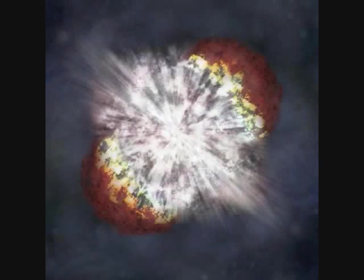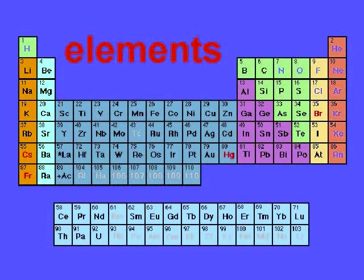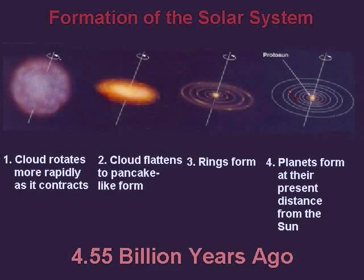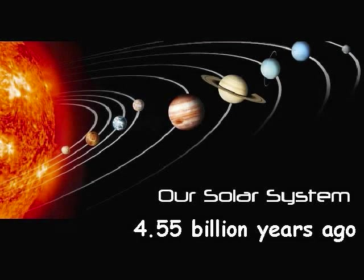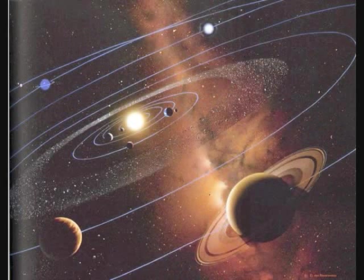These stars matured, and as they began to die, they exploded into supernovas — gigantic nuclear explosions that created the other 90 or so atoms that we know today. With these new atoms, new clouds again formed by gravitational attraction, creating new solar systems made up of suns and planets throughout the universe. This is how our solar system was first created 4.55 billion years ago.